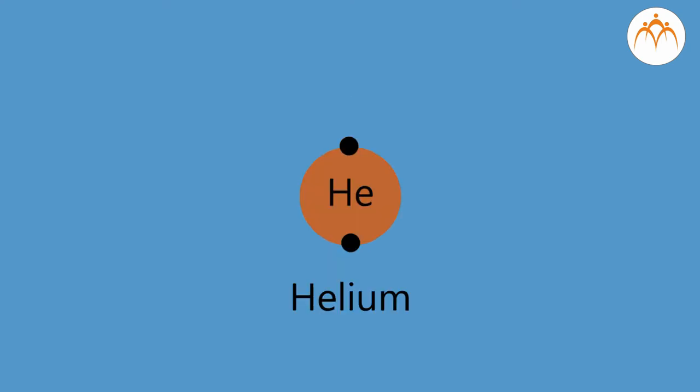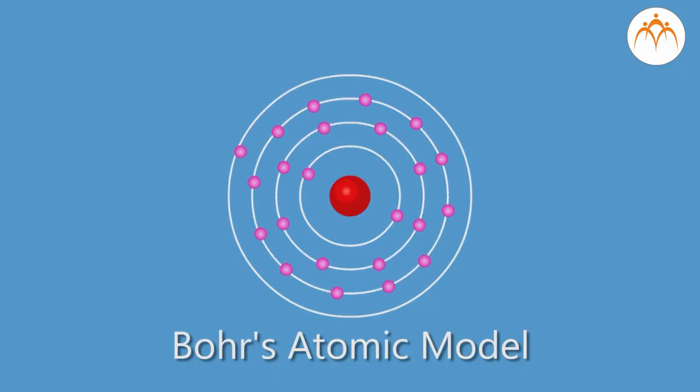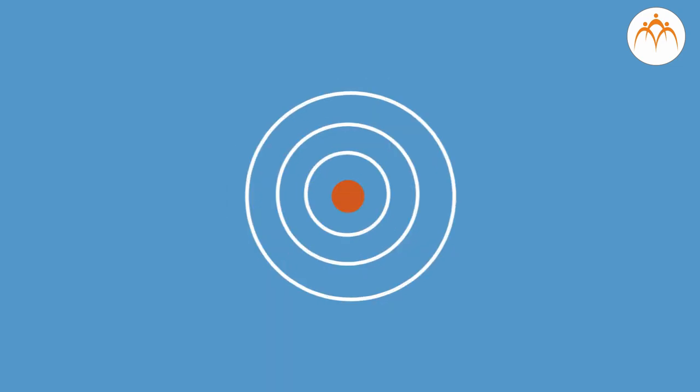And if first orbit is outermost orbit, it can accommodate only 2 electrons. Summary: In this video we learned how Bohr improved upon Rutherford's planetary model. We also learned about modern atomic model.